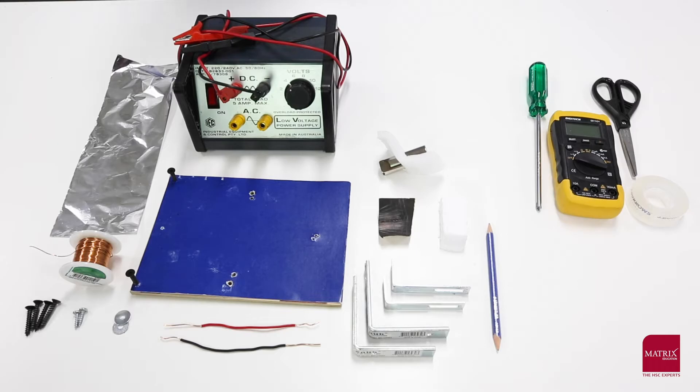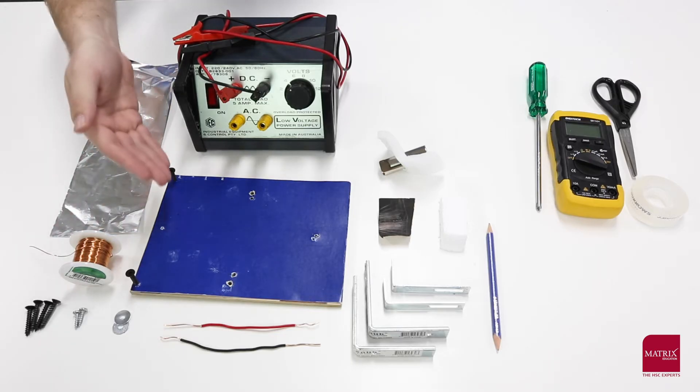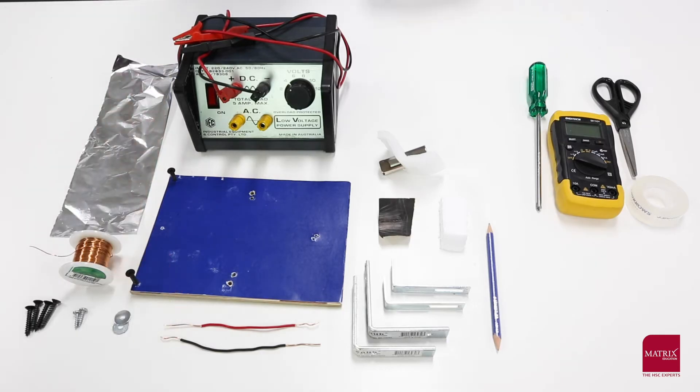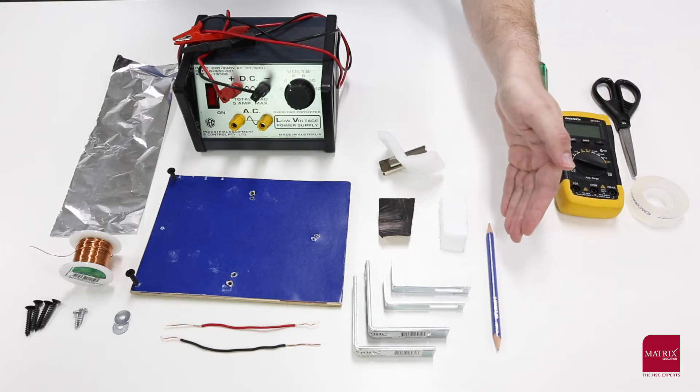To build your Nomoda motor, you're going to need some aluminum foil, insulated copper wire, screws and fasteners, a power pack, a sturdy piece of wood, two rigid copper wires, a set of strong magnets, a piece of styrofoam, sandpaper, four angle brackets, and a sharpened pencil on both sides.